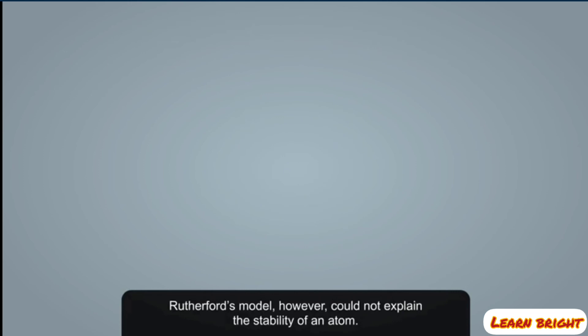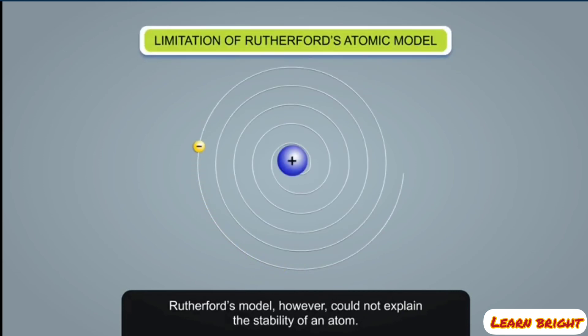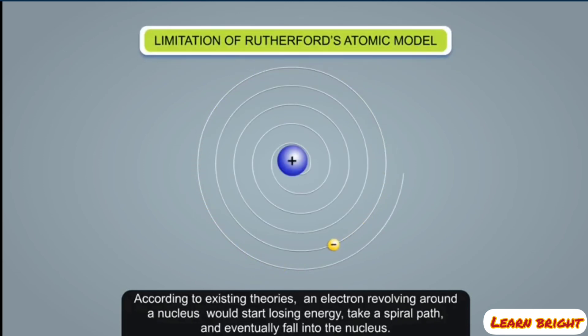Rutherford's model, however, could not explain the stability of an atom. According to existing theories, an electron revolving around the nucleus would start losing energy, take a spiral path, and eventually fall into the nucleus.